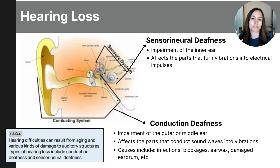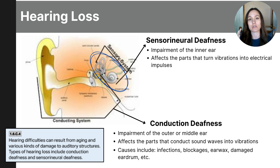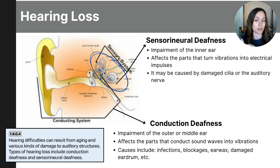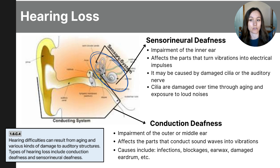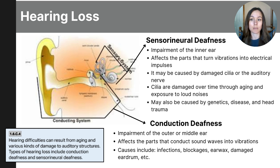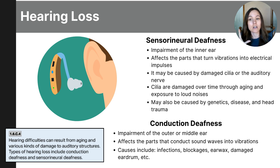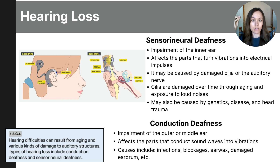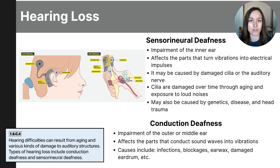Sensorineural hearing loss usually affects the hair cells in the cochlea that turn vibrations into impulses, or occurs when there is a defect or damage to the auditory nerve fibers that carry the nerve impulse. Aging and exposure to loud sounds over time can damage the hair cells. Genetics, disease, and head trauma can also affect the cochlea and auditory nerve, causing sensorineural deafness. Hearing aids can be worn outside of the ear to amplify sound, and cochlear implants detect sound on the outside of the ear and transmit electrical signals directly into the cochlea. The College Board's objective is for students to identify the broader types of hearing loss as well as some general causes like aging and damage to the structures of the auditory system.